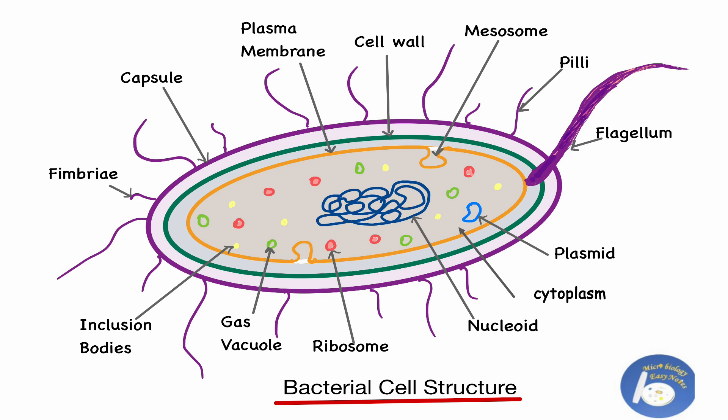In previous videos I have already discussed what is cell wall, plasma membrane, cell inclusions like gas vacuoles, ribosomes, mesosomes, cytoplasm, etc. You can find the link to those videos in the description box below. Today I will try to explain what is plasmid and its types.